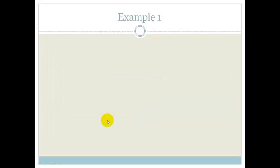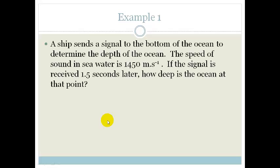Now, we can use the wave equation, and all equations that we've gone through now, in a couple of examples. Let's look at a couple of examples. First of all, it says, a ship sends a signal to the bottom of the ocean to determine the depth of the ocean. So, the ship wants to know, is it going to sink? Is it going to hit the bottom of the ocean? It wants to know the depth of the ocean. The speed of sound in water is 1,450 meters per second. If the signal is received 1.5 seconds later, how deep is the ocean at that point?